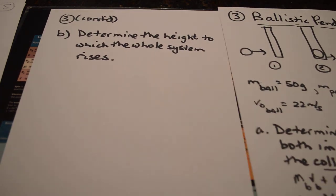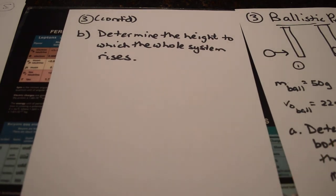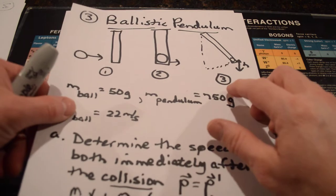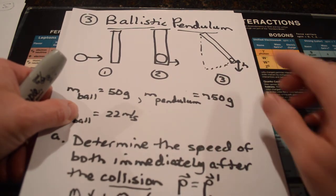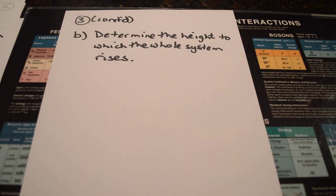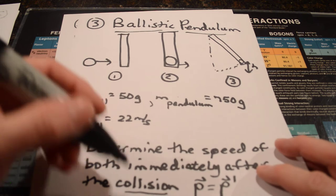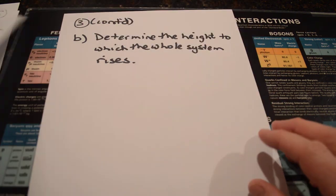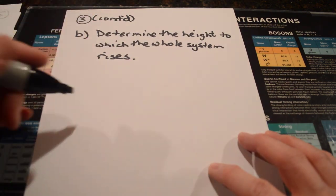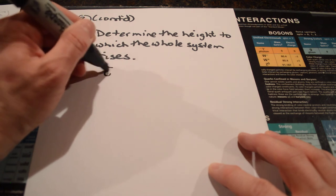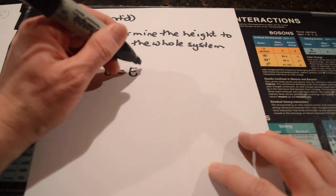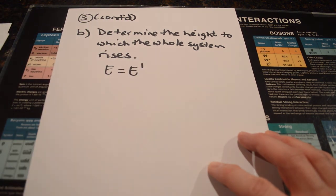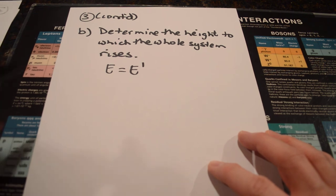The next part of that problem is can we determine what the height to which the whole system rises, which would be what's happening in the third step. So, in that case, the reason why this is a pretty common physics problem is the first part you used momentum conservation in the collision. The second part, it makes sense that it's going to rise up that you're going to use energy conservation to figure out what the potential energy at the top might be.